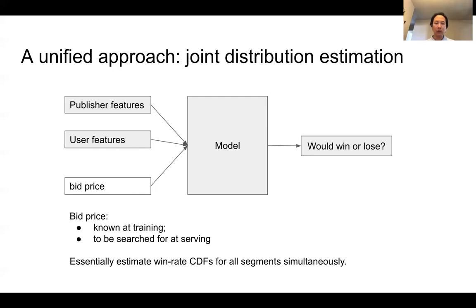So if we try another bid price, we get another expected surplus. So this becomes an optimization problem to find the best bid price that has the largest expected surplus. So at serving time, we need to run the inference multiple times.